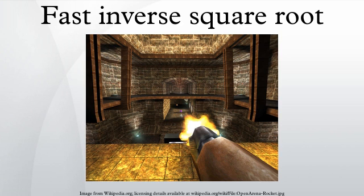Quake 3 Arena used the fast inverse square root algorithm to speed up graphics processing. Quake 3 Arena has also been implemented in some dedicated hardware vertex shaders using field-programmable gate arrays.